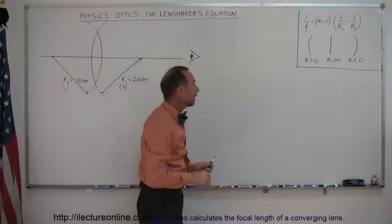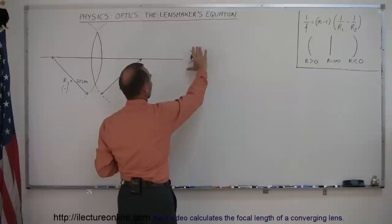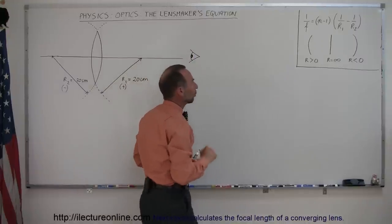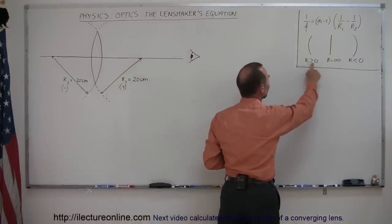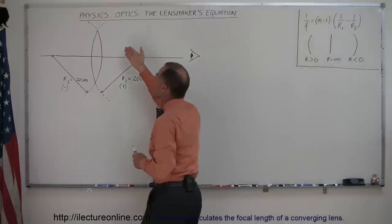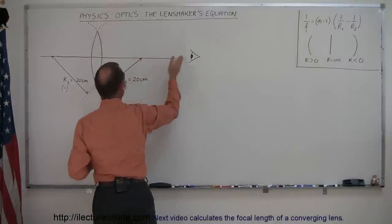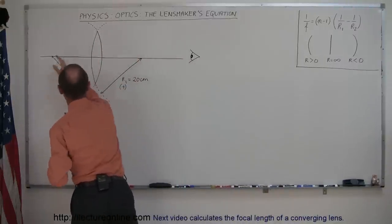Also what's important is in the setup we assume that the observer is to the right of the lens. And so we call the radius of curvature positive greater than 0 if the radius curves away from the observer or towards the left.